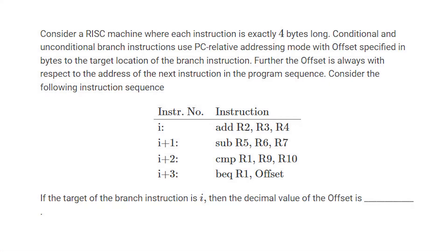Consider a RISC machine where each instruction is exactly 4 bytes long. Conditional and unconditional branch instructions use PC relative addressing mode, with offsets specified in bytes to the target location of the branch instruction. Further, the offset is always with respect to the address of next instruction in program sequence.